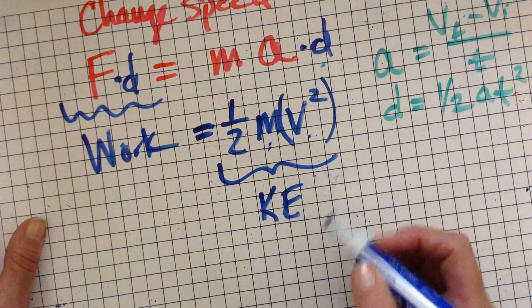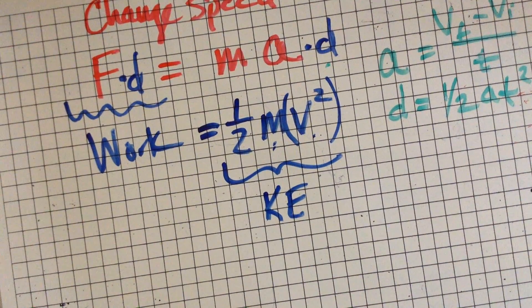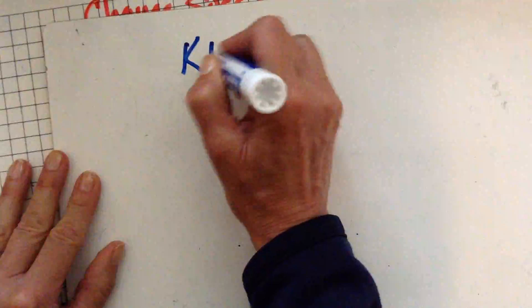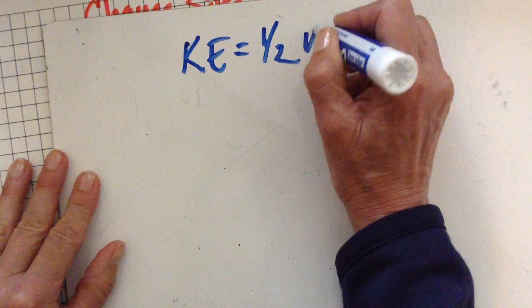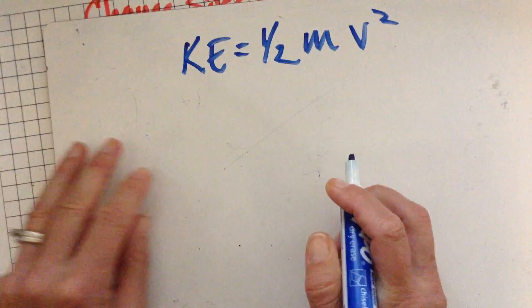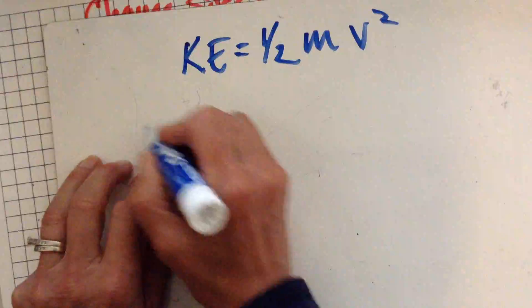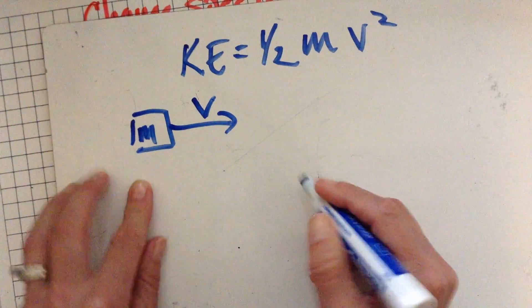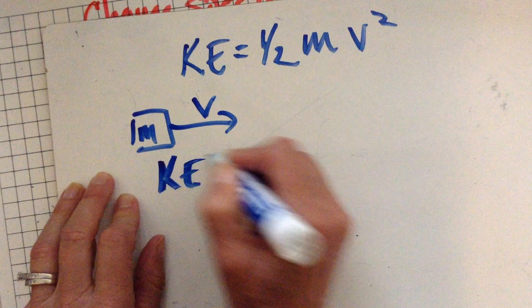So what do we mean by that whole idea of proportional to the speed squared? Let me just grab another board here. So kinetic energy equals one half mv squared. So if I have an object that's moving along at a certain speed here, and it's got a certain mass, well, it's going to have a certain kinetic energy.